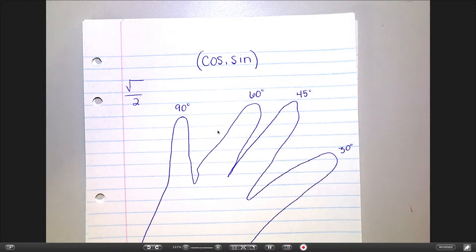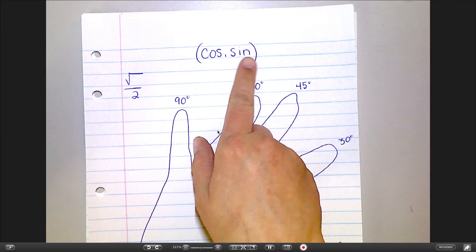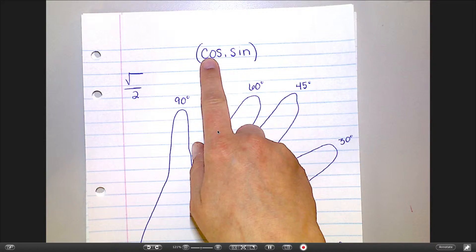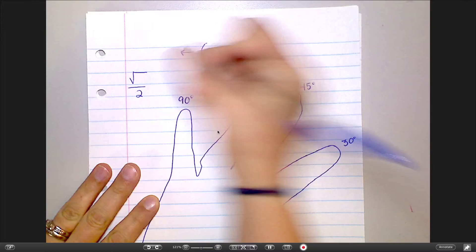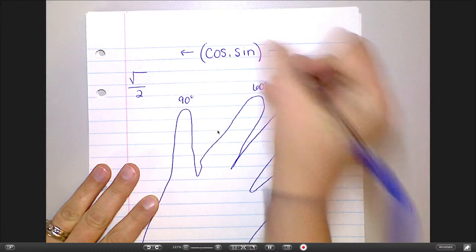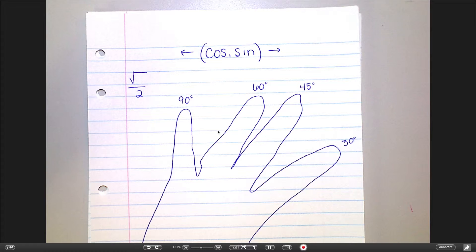Now, remember on the unit circle that all of the coordinates are cosine, comma, sine. So, cosine first, then sine. If you know that, you can remember that cosine is on the left and sine is on the right. I know this sounds complicated, but if you figure out how to use this, it's going to make a lot of sense to you.